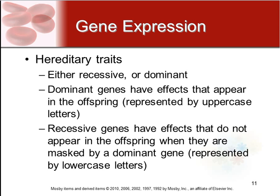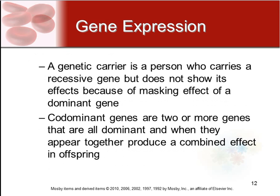There are hereditary traits, which are normally either recessive or dominant. Dominant traits have effects that appear in the offspring — expressed in uppercase letters — and are the ones we can physically see. Recessive traits have an effect that does not appear even though the gene is carried, and are represented by lowercase letters. A genetic carrier is someone who has a recessive gene but does not show it because it's being masked by a dominant gene.